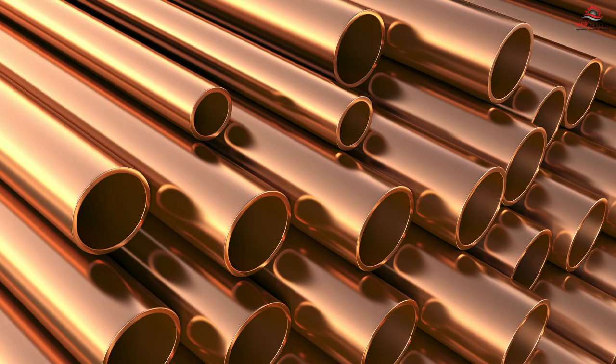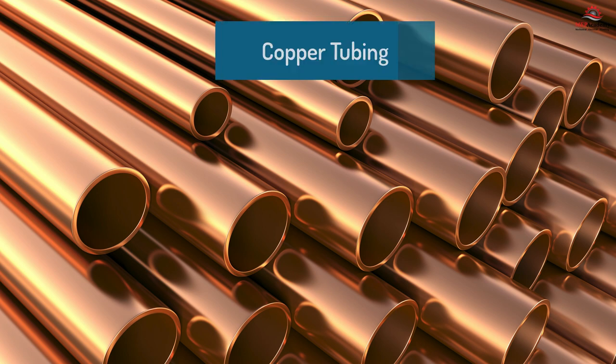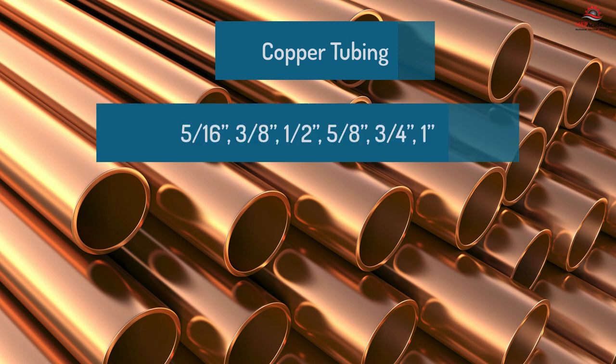We'll cover coil construction. Most coils used in the HVAC industry are constructed using copper tubing, ranging in size from 5/16 inch up to 1 inch OD. You may find 5/8 inch to be the most commonly used size.